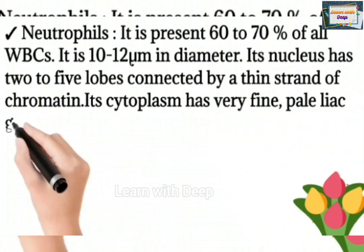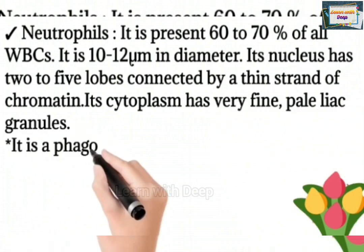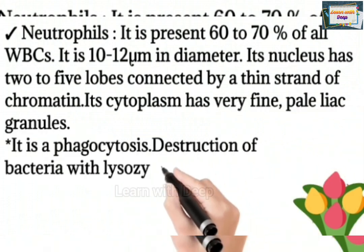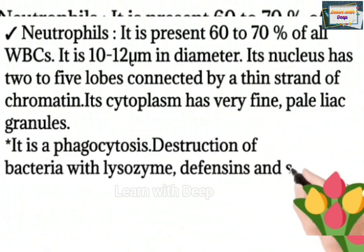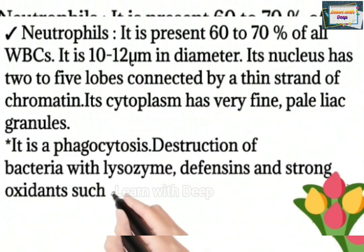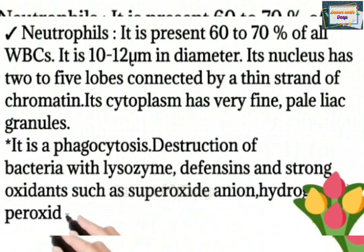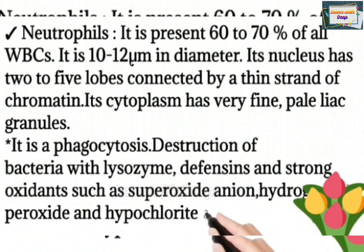Neutrophils make up 60 to 70% of all WBCs. They are 10 to 12 micrometers in diameter. The nucleus has 2 to 5 lobes connected by a thin strand of chromatin. The cytoplasm has very fine pale granules. Their function includes phagocytosis and destruction of bacteria using lysozyme, restriction enzymes, and strong oxidants such as superoxide anion, hydroxyl, and ferroxyl.